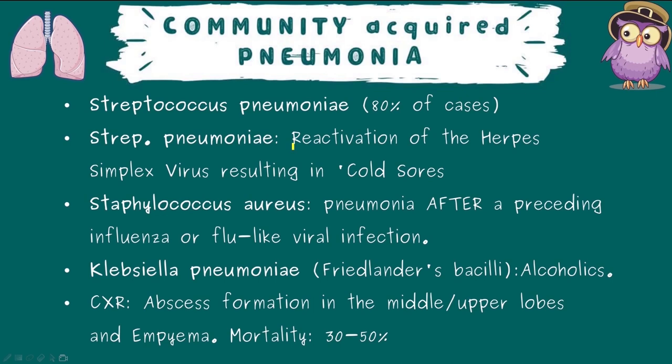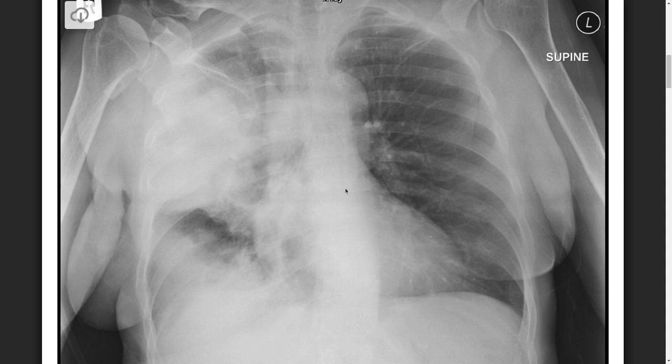Typical features of Strep pneumonia include reactivation of herpes simplex virus resulting in cold sores, which can appear on the upper lip. This is an important marker for the exam — it will definitely be mentioned in the MCQ stem pointing you towards Strep pneumonia. Most guidelines recommend combination therapy with a penicillin and a macrolide. Smoking is an important risk factor.